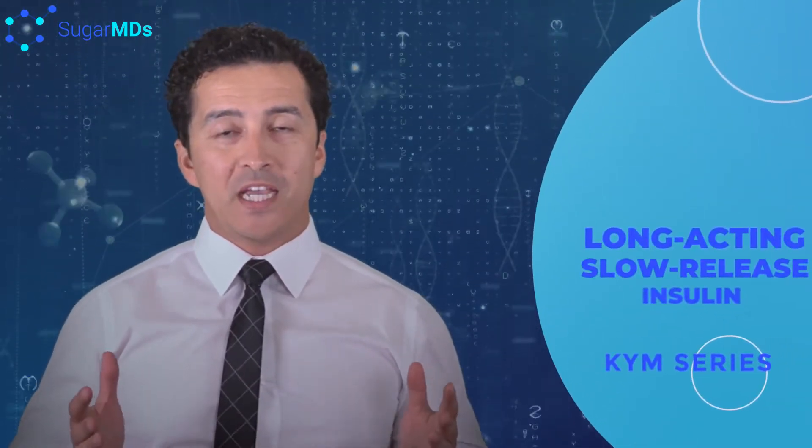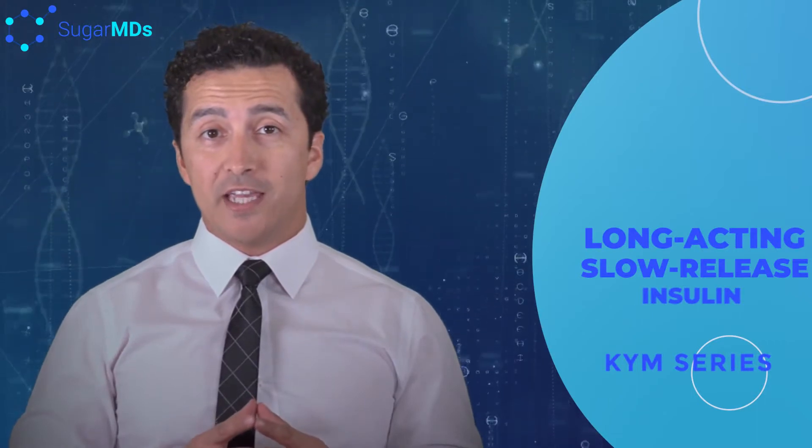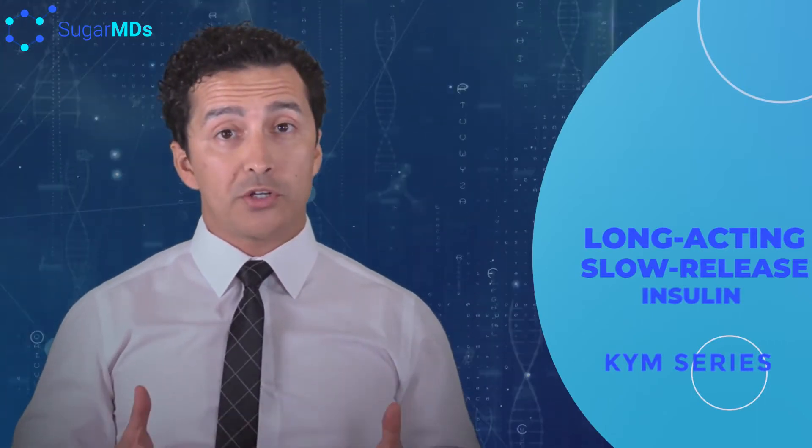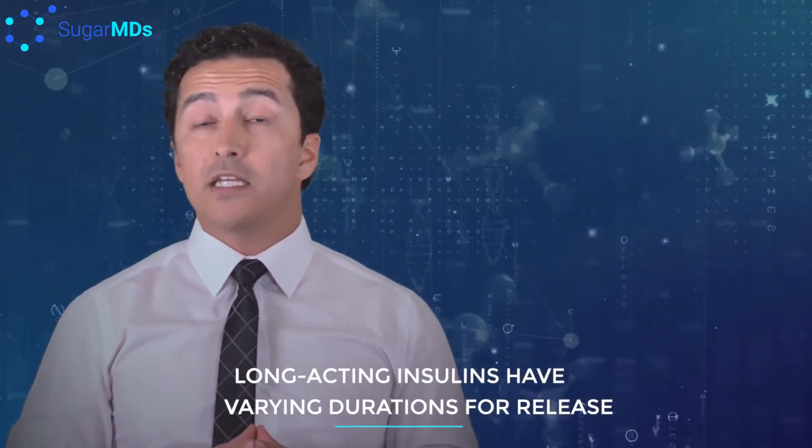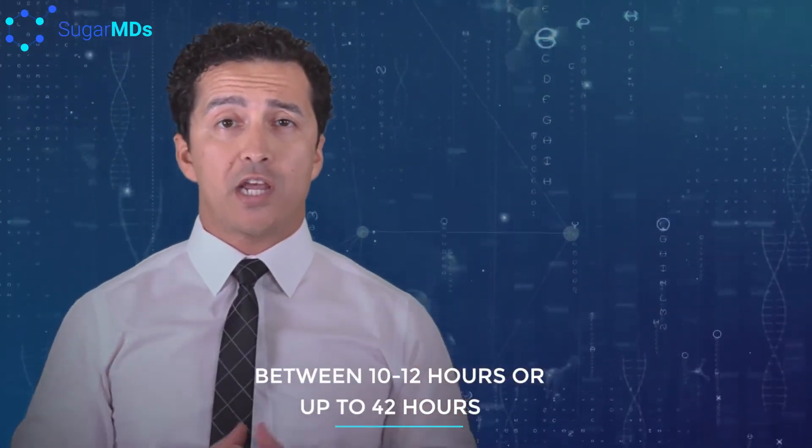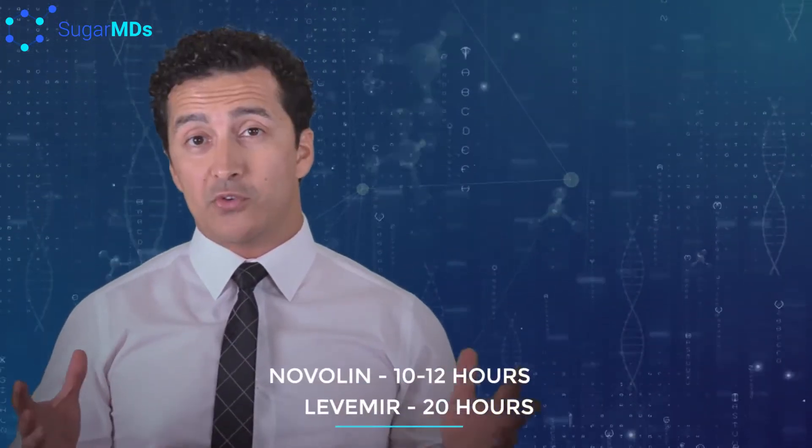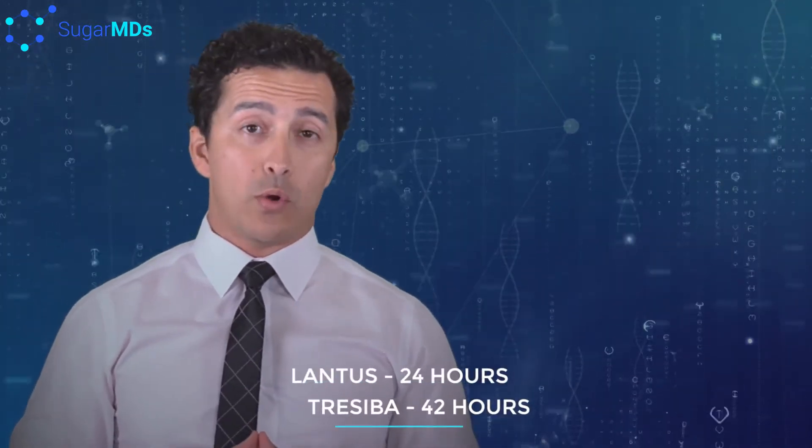What does a long-acting insulin mean? It is an insulin that you take, goes under your skin, and is slowly released over a certain amount of time. You may be taking Novolin, in this case you're looking for 10 to 12 hours of action time for the insulin. If you are taking Tresiba, that may be 42 hours.